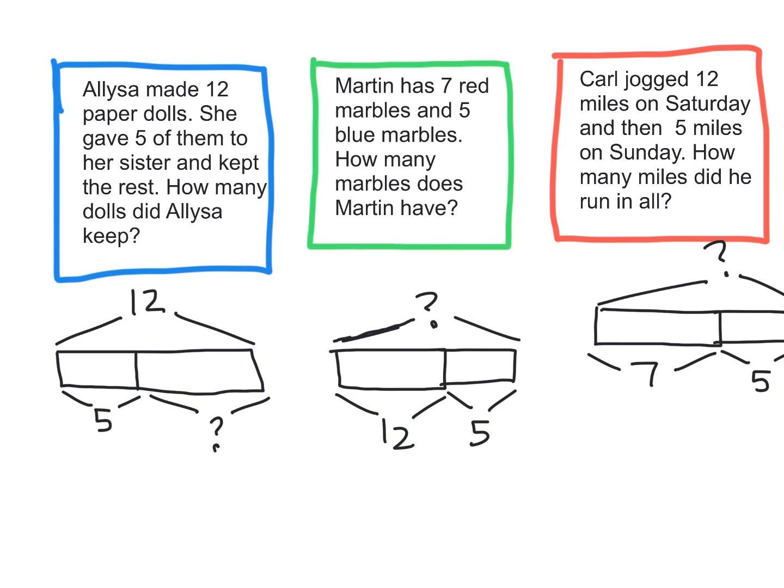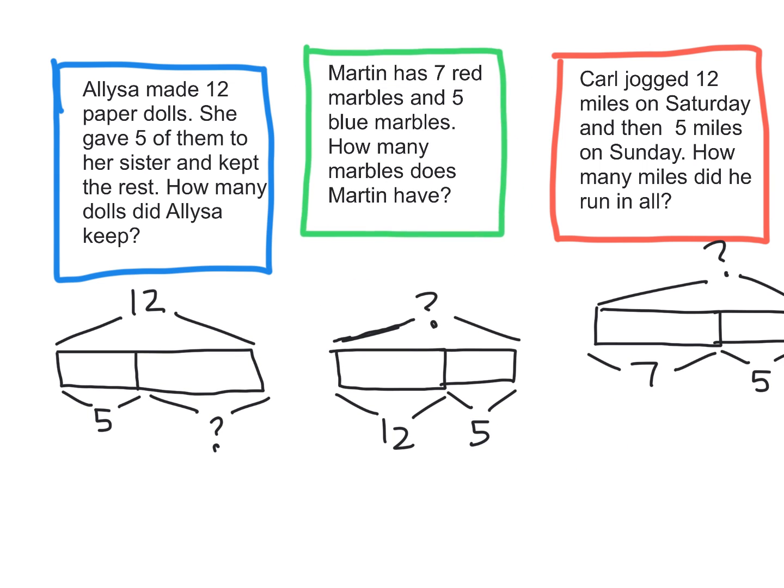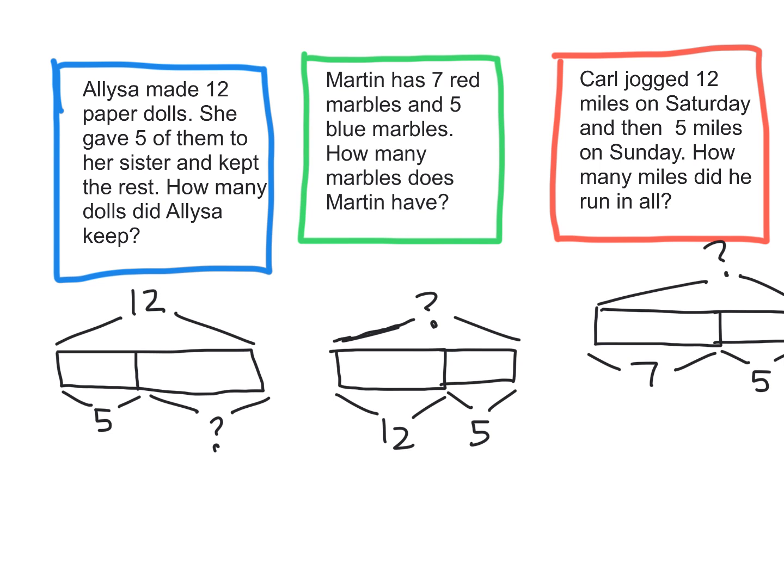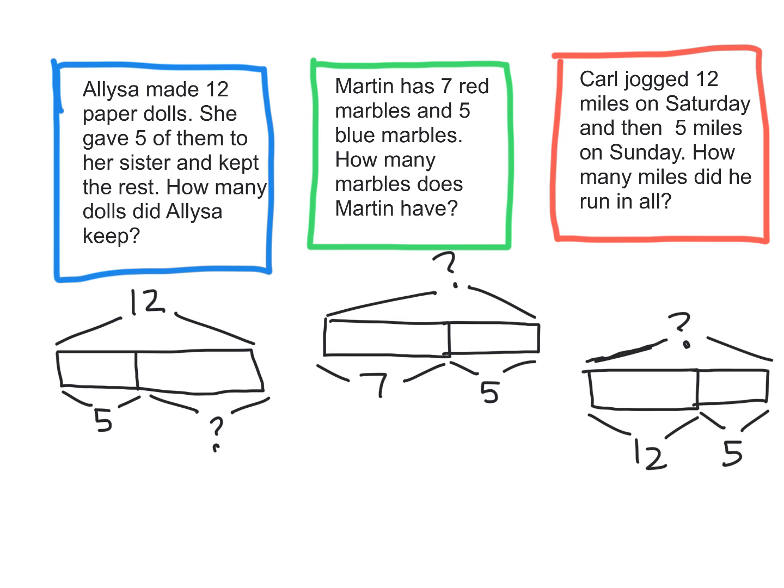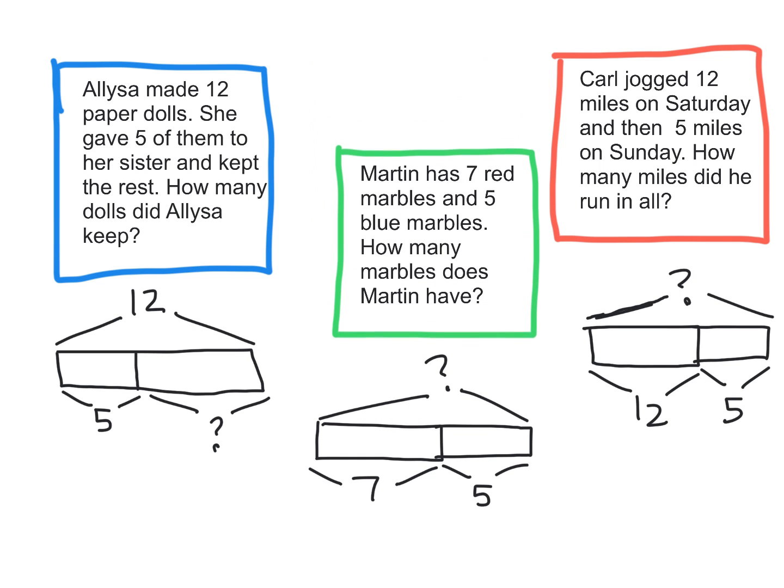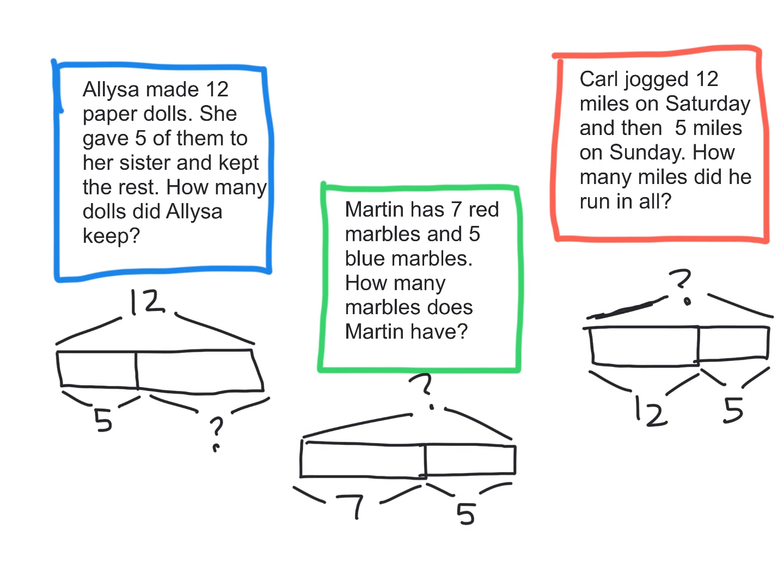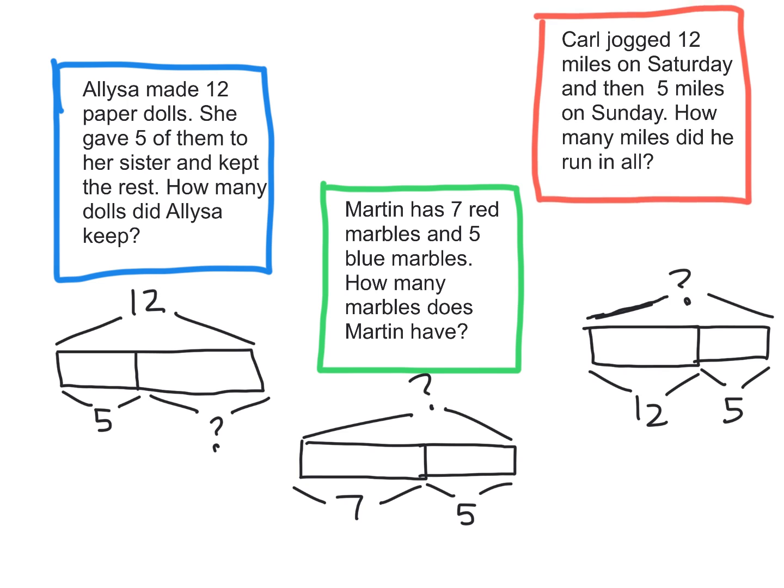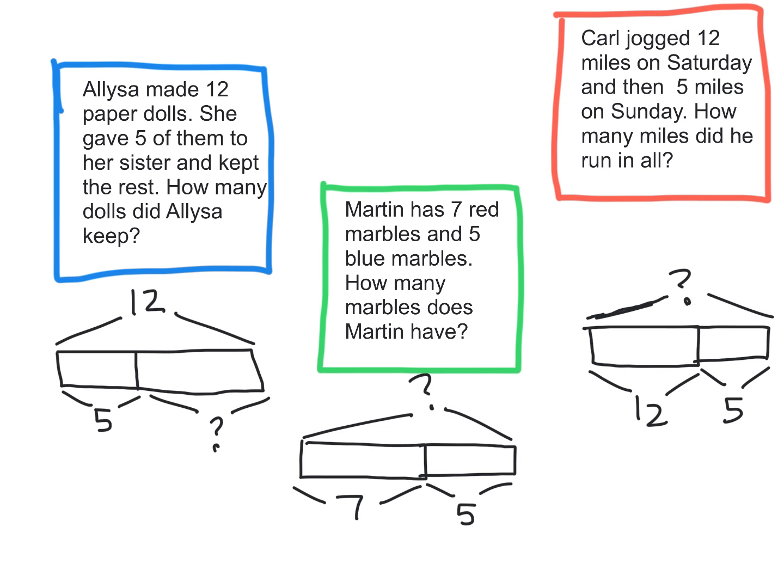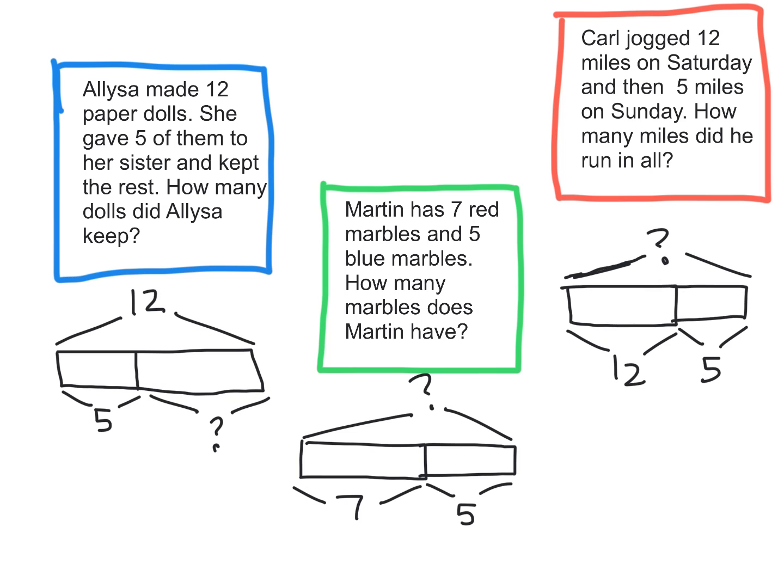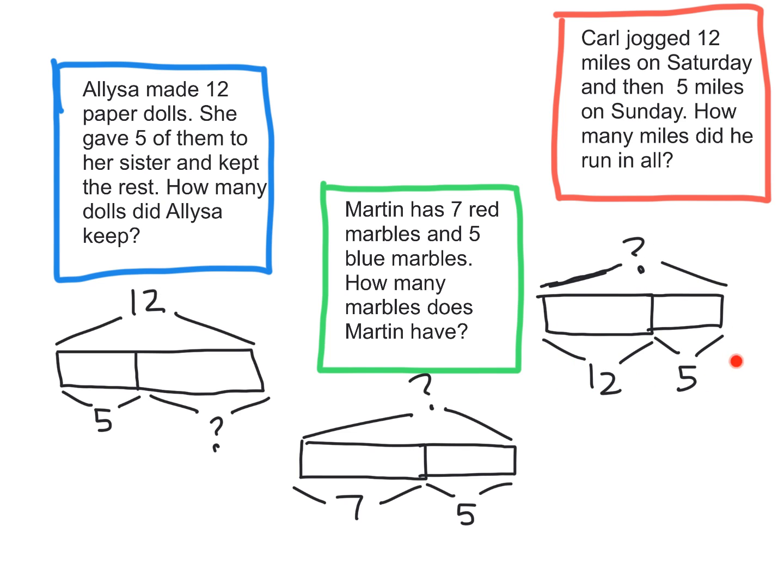Oh, in fact, I'm right here. Martin has seven red marbles and five blue marbles. How many does he have total, right? So that would go with this one, right here. And then by process of elimination, we've got Carl jogging 12 miles on Saturday, and then five miles on Sunday. How many miles did he run in all? So there you go, right here. Because you've got Saturday, you've got Sunday, here's the total right here.